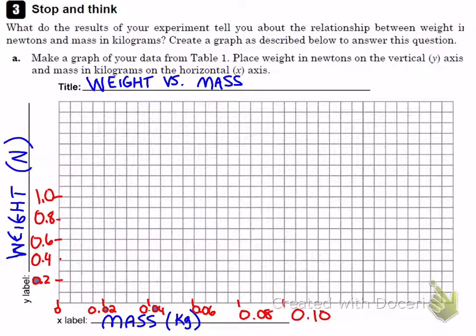And your data might look a little bit different, but the general shape of the graph is going to be something like this, a straight line. As you add mass, the weight goes up, and it's a linear relationship. The slope of this line, which you're going to be asked to calculate in the conclusions, is going to be equal to the strength of gravity.